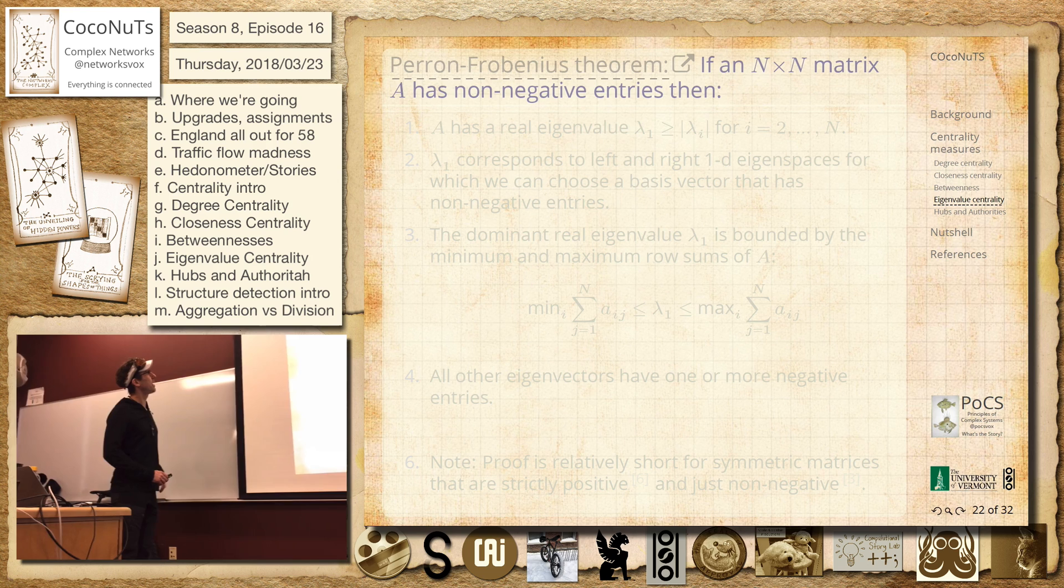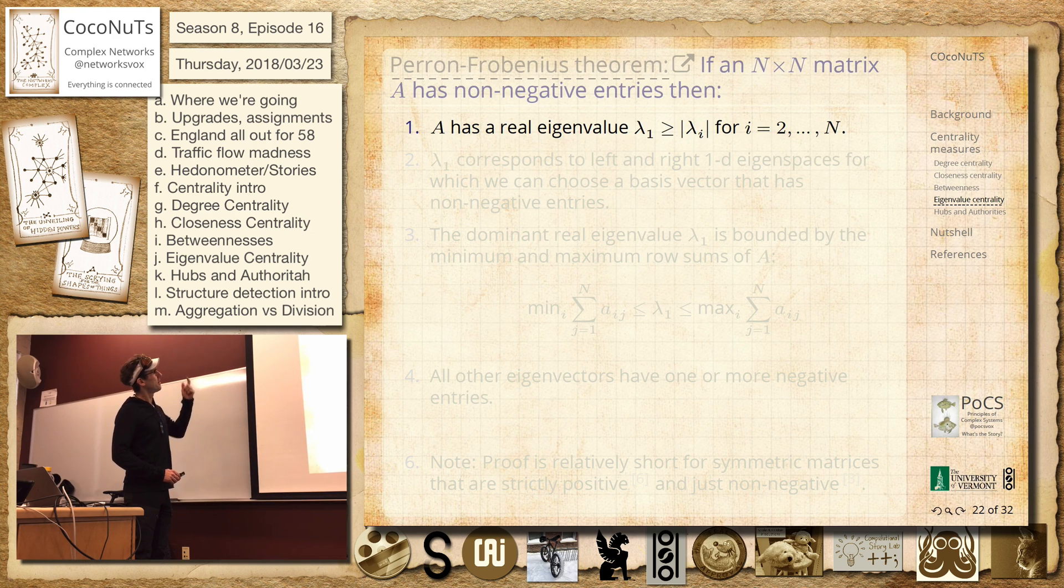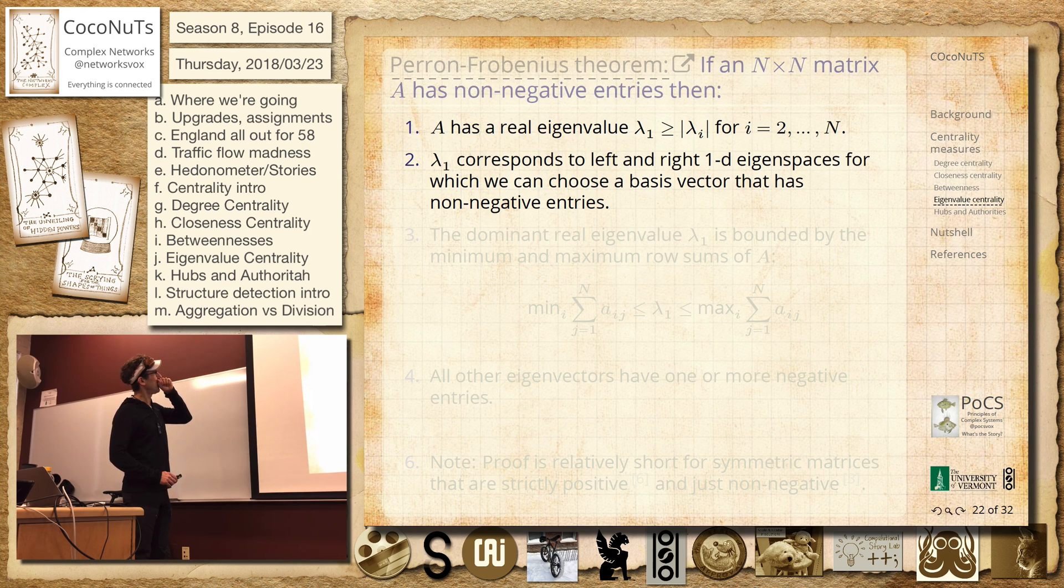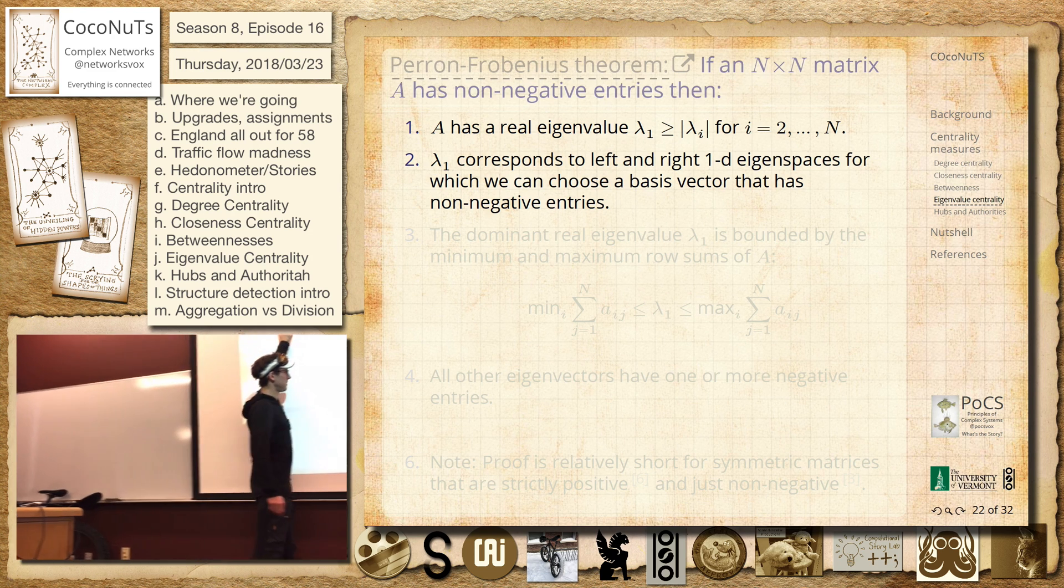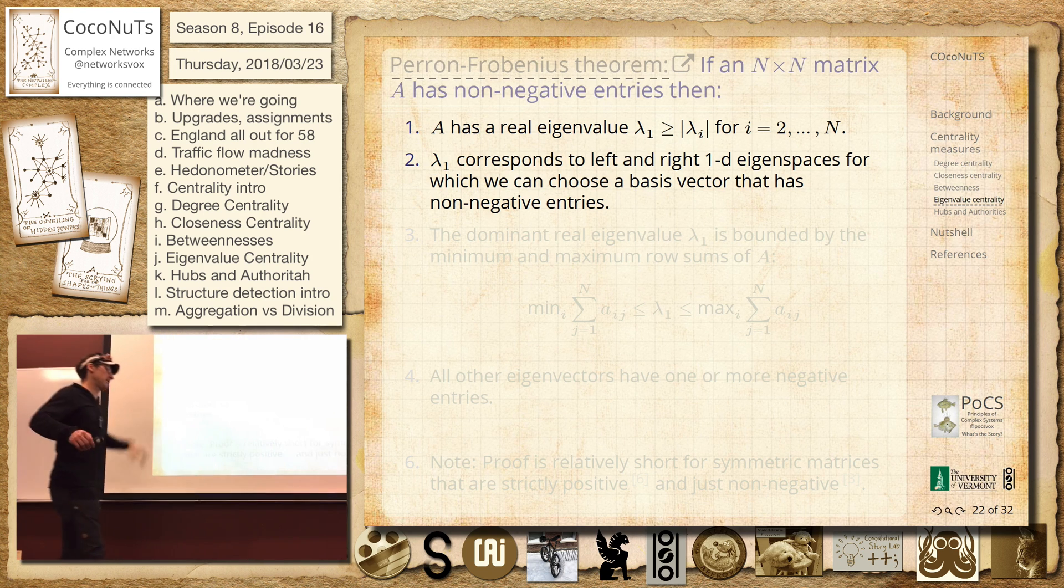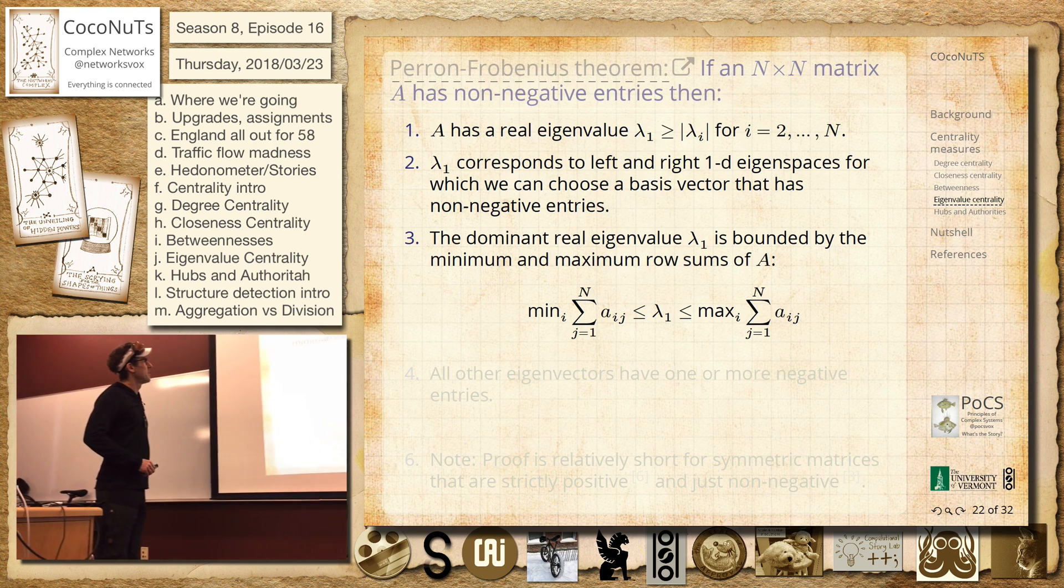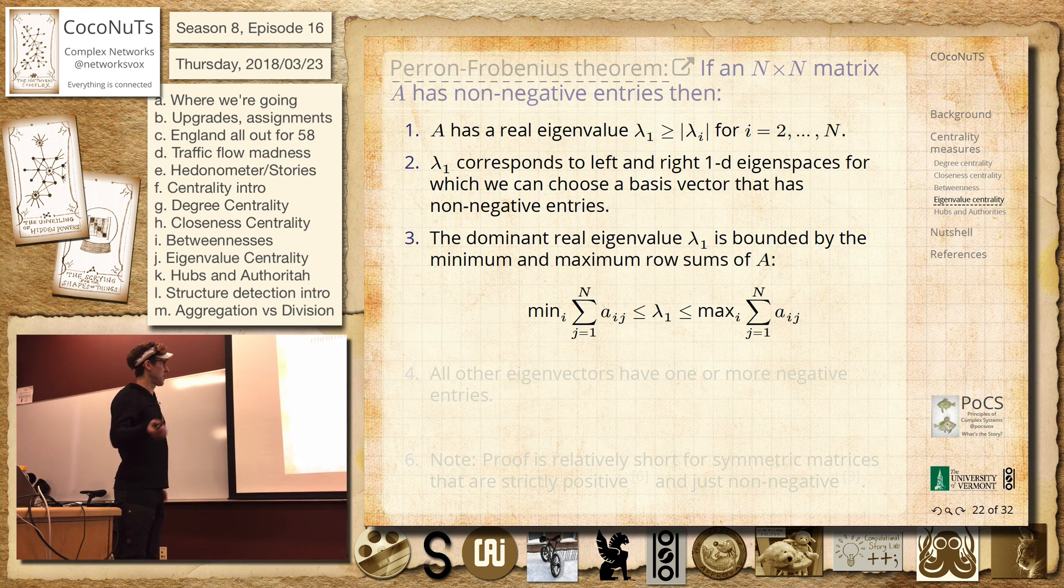So we can ask for that. So this is, we have a real eigenvalue, dominant eigenvalue, which is greater than all of the others. Positive. Positive. Yeah, we can choose a basis vector that has non-negative entries. Again, that's up to us, of course. They're all the same sign.